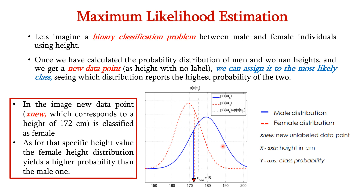For example, consider this image. We have a blue line for the male distribution and a red line for the female distribution. Now assume we have a new unlabeled data point, x_new. The x-axis is height in centimeters and the y-axis is class probability. In this image, the new data point corresponds to a height of 172 centimeters. It is classified as female because for that specific height value, the female height distribution yields a higher probability than the male one. So we decide that this new data point belongs to the female distribution.